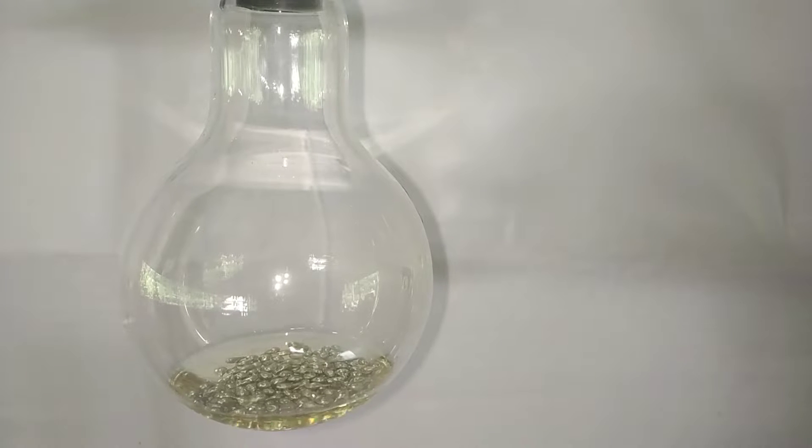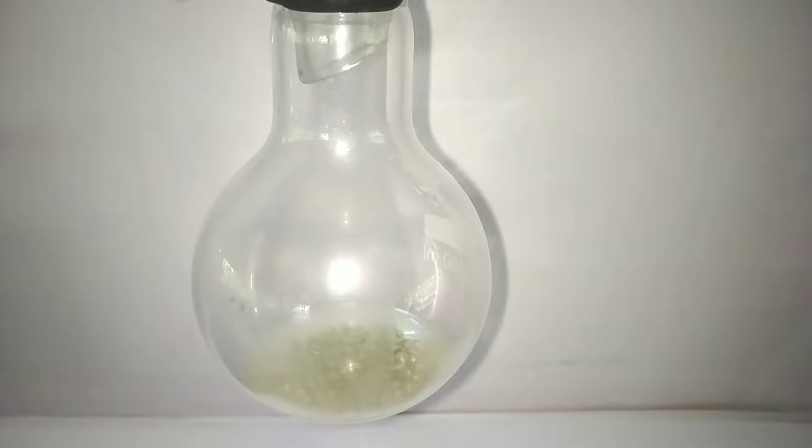Now attach a condenser over the flask and start refluxing the solution. Then add concentrated hydrochloric acid in small lots. I added about 7 ml of concentrated HCl at a time to prevent a vigorous reaction.